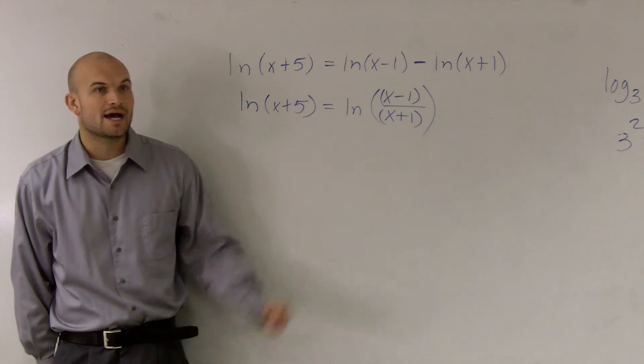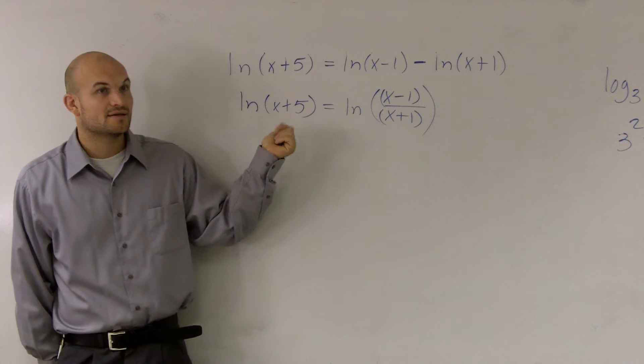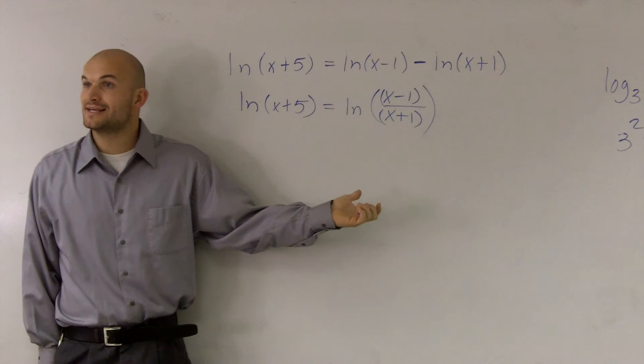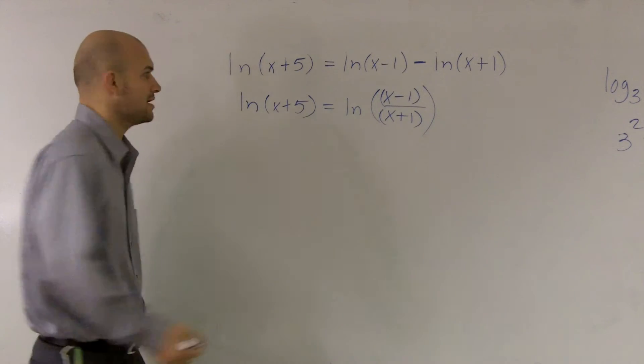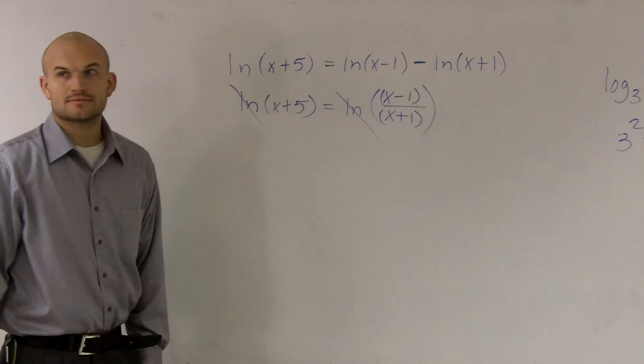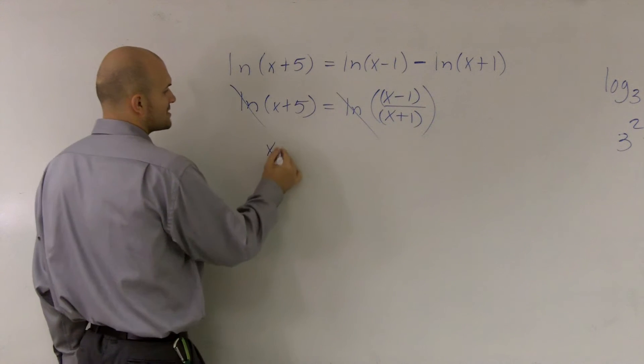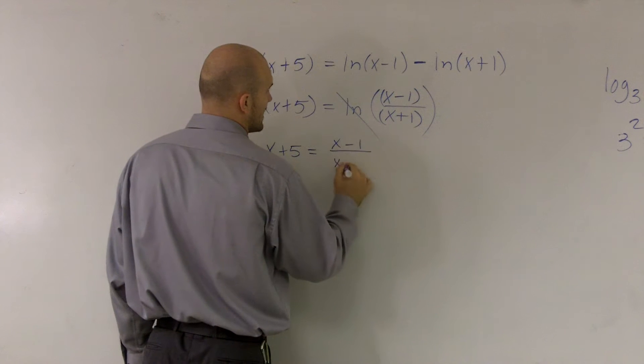Now I have a logarithm equal to another logarithm and they both have the same base. Whenever that occurs, I can cancel out my logs, which is exactly what I want. I don't like solving with logs. So I can just cancel them out. Now I have x+5 equals (x-1)/(x+1).